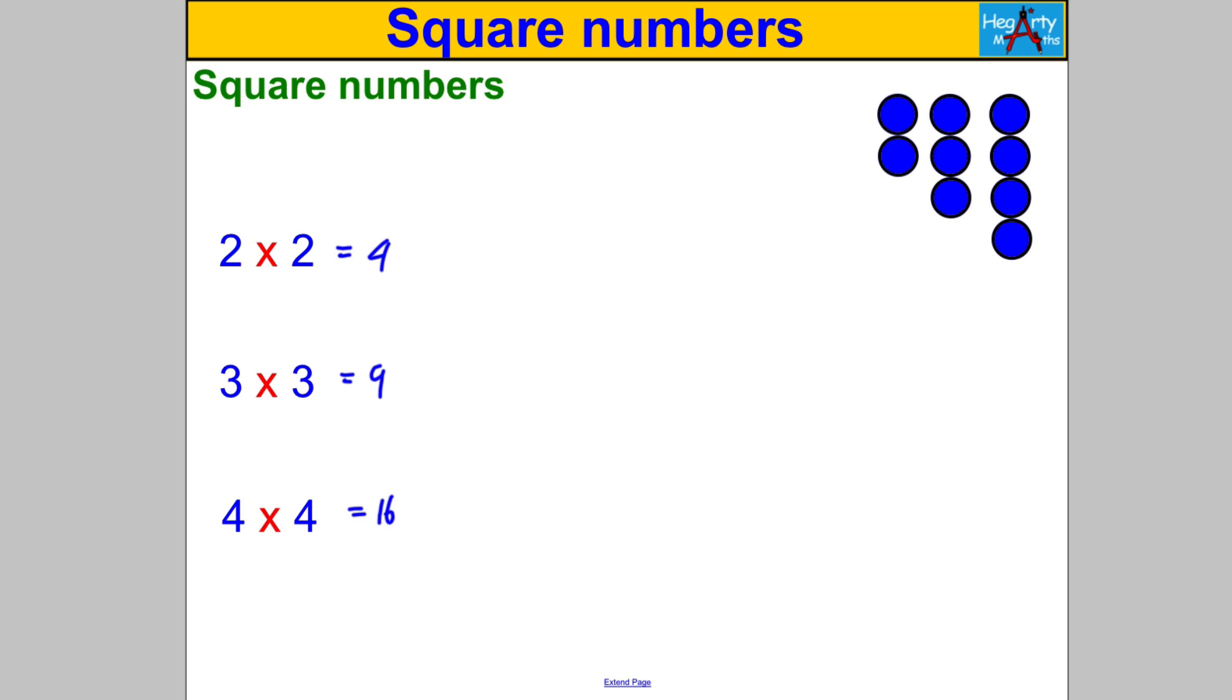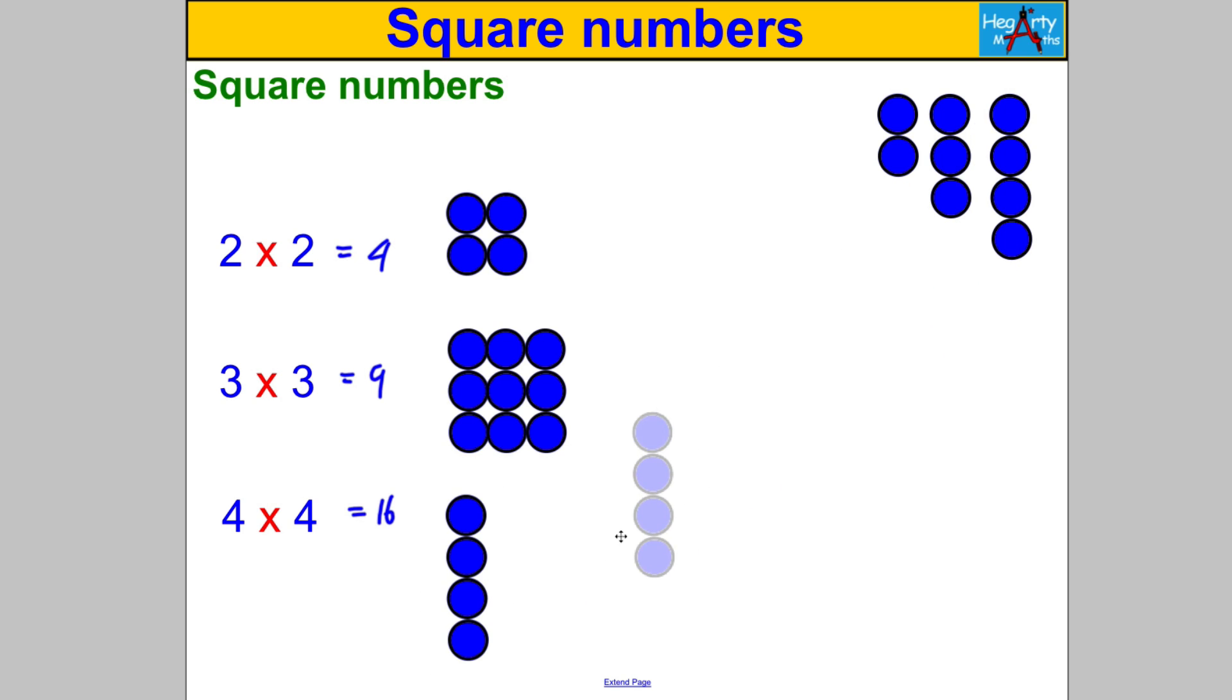Now I'm going to draw 2 multiplied by 2 for you or represent it with a picture. 2 multiplied by 2 means 2 lots of 2. Here's 1 lot of 2, here's 2 lots of 2. 3 multiplied by 3 means 3 lots of 3. So here's 1, 3, here's a second 3 and here's a third 3. And 4 multiplied by 4 means 4 lots of 4. 1 lot of 4, 2 lots of 4, 3 lots of 4 and finally 4 lots of 4.